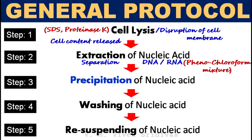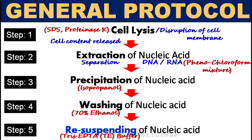The third step is precipitation. Following separation, the nucleic acid is precipitated using cold absolute ethanol or isopropanol. The fourth step is washing. To ensure the purity and quality of the nucleic acid, the precipitated nucleic acid is washed once or twice with 70% ethanol. The final step is resuspending, where the washed and precipitated nucleic acid is resuspended in Tris-EDTA buffer for storage until further use.